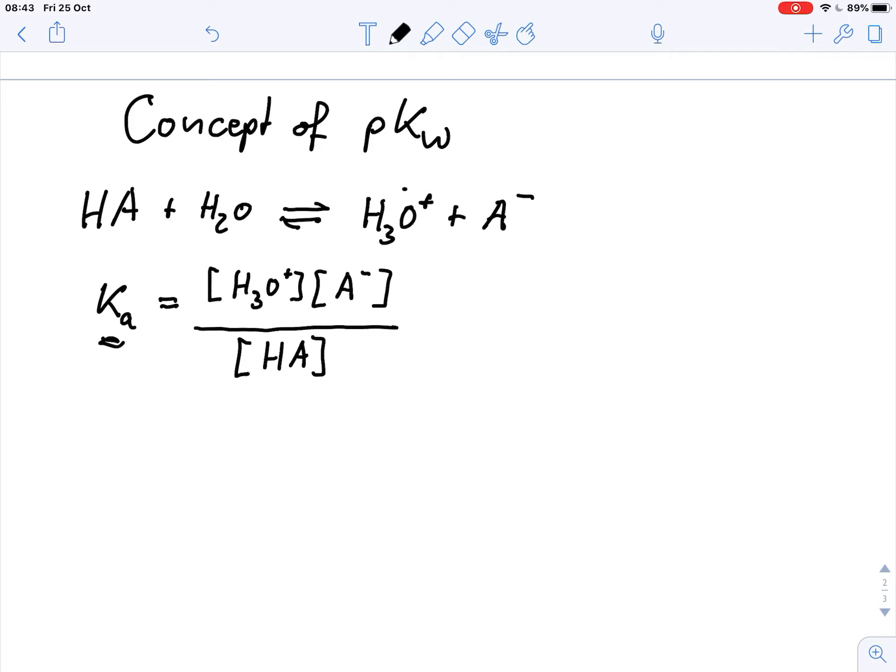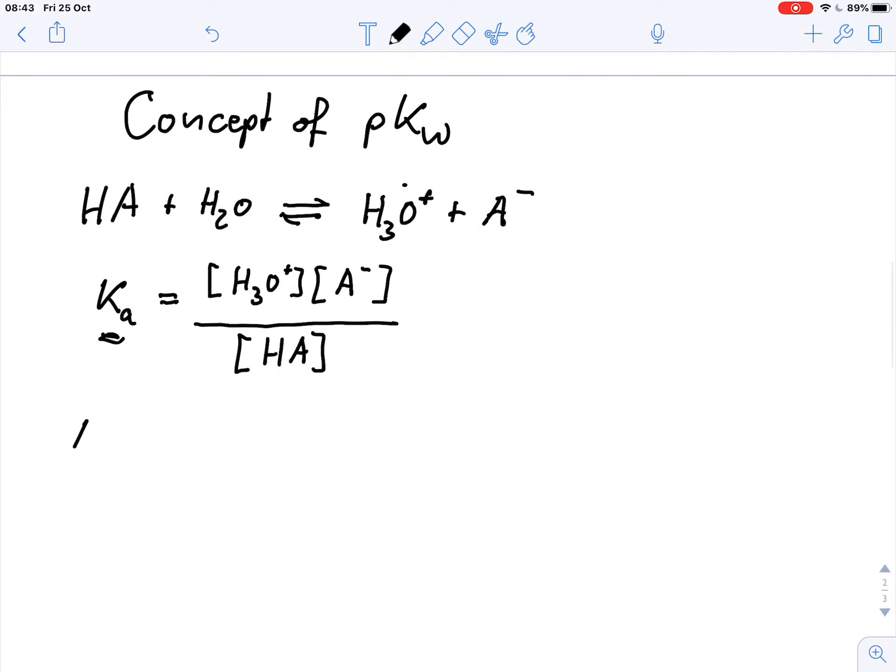We can also write the equation for the base. So the base plus water in equilibrium gives us the conjugate acid plus OH minus.